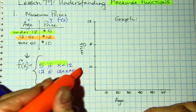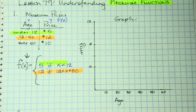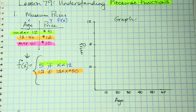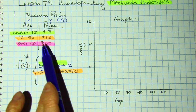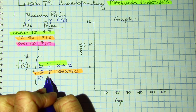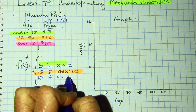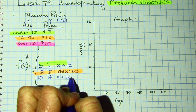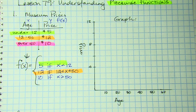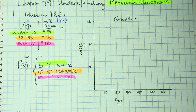Last but not least, if you are over 50, you pay $10. So F of X equals $10 if X is greater than 50. That is how you would write it in function notation — that would be the function.